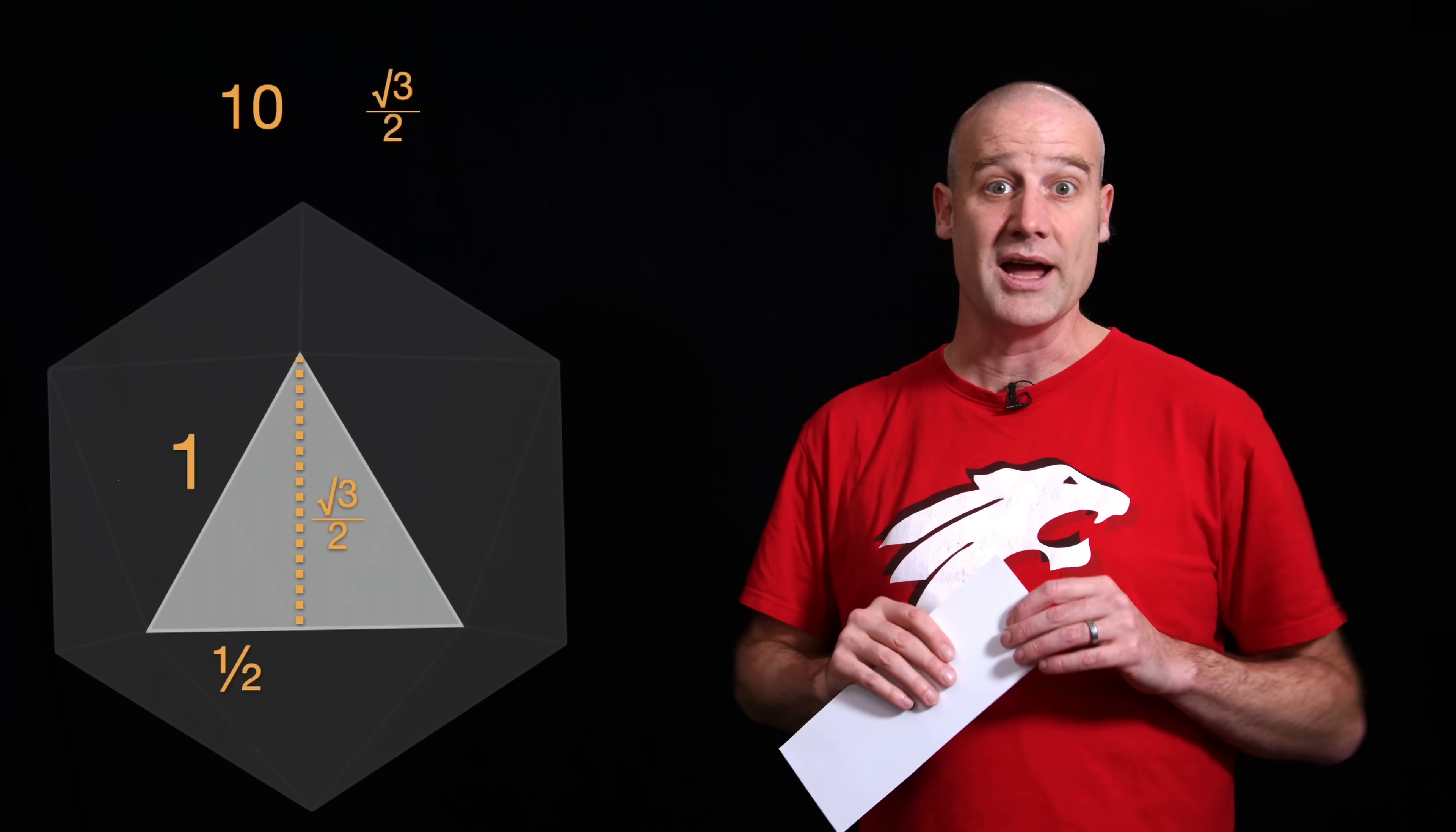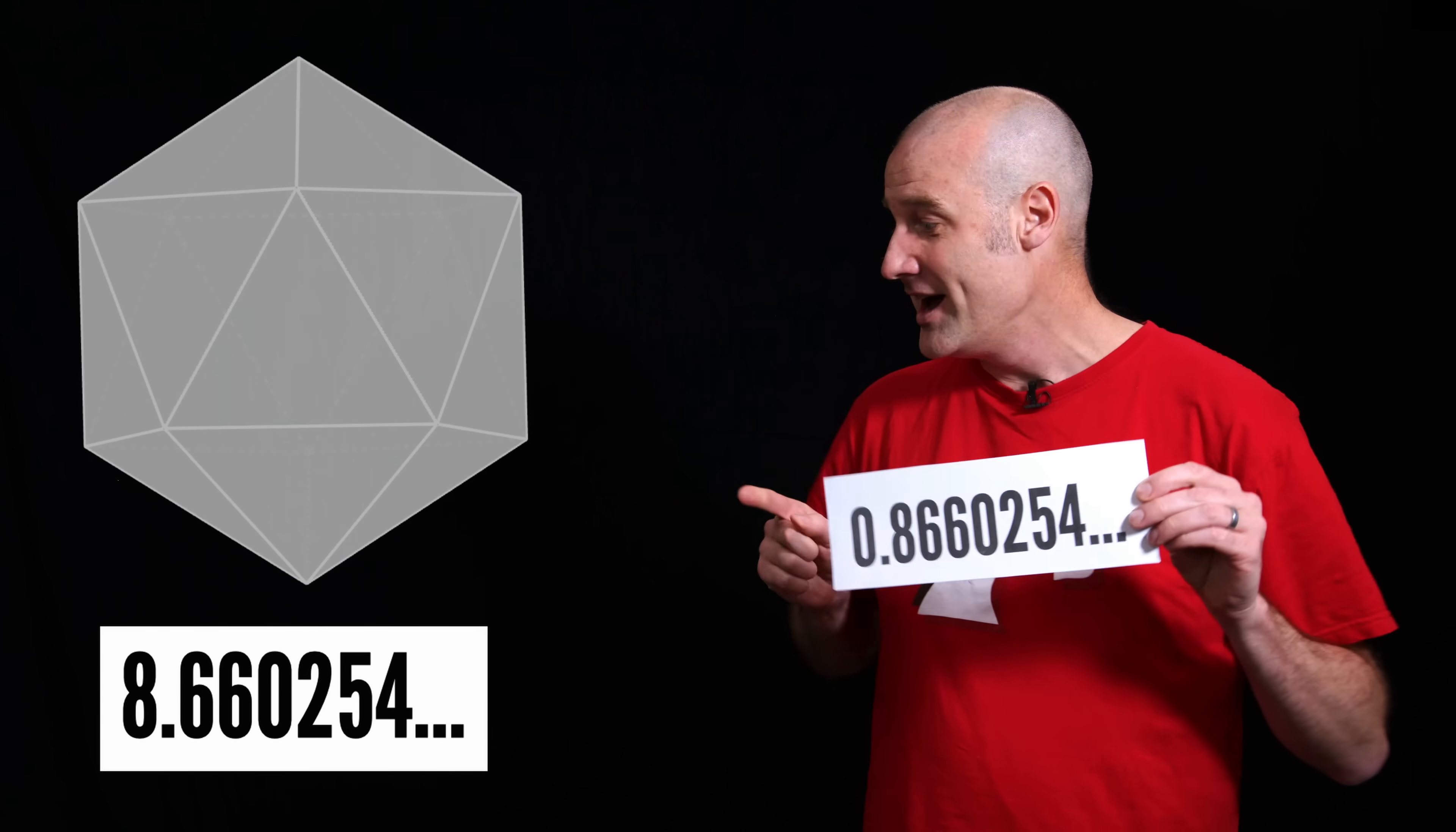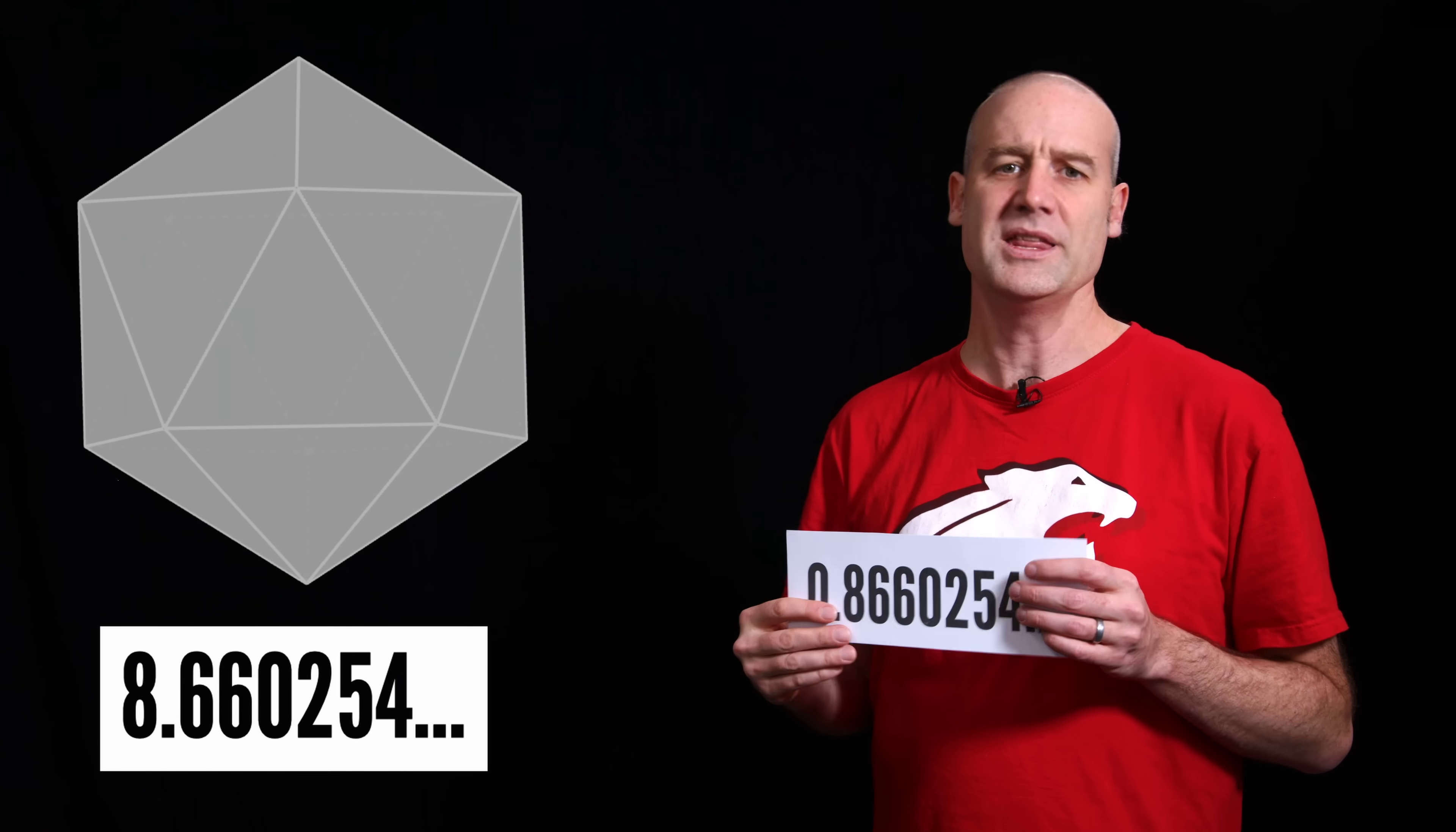That is the area of all 20 faces of an icosahedron, 10 times the square root of 3 on 2. And guess what? The square root of 3 on 2 equals this number. So that's why, because we work out the area, we get root 3 on 2, this number, the mystery number this video is all about, times 10, just shifts the digits along 1.